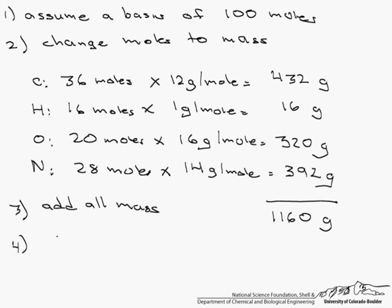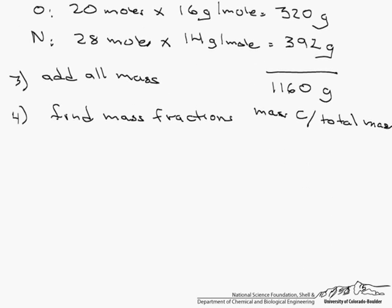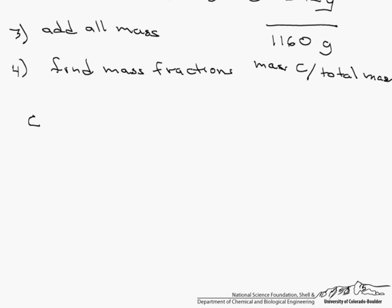And our final step is to find the mass fraction, which for example is the mass of carbon, or hydrogen, or oxygen, or nitrogen, over the total mass. So let's see what that looks like. We'll start with carbon. There are 432 grams of carbon, and we divide that by 1160 grams, and our mass fraction is 0.372.